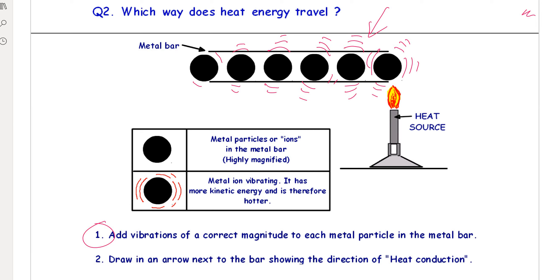And the final thing is number two: draw in an arrow next to the bar showing the direction of heat conduction. Heat conduction is in that way, so we call that heat.